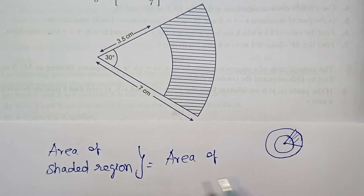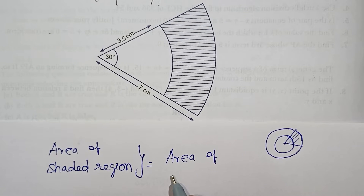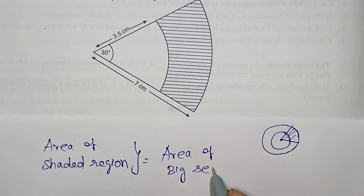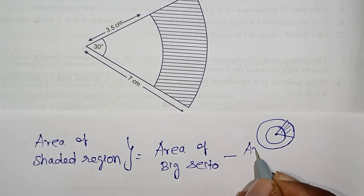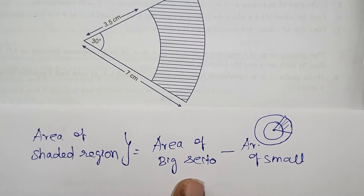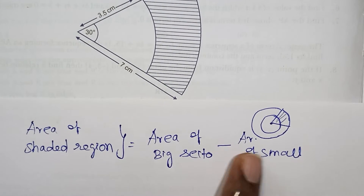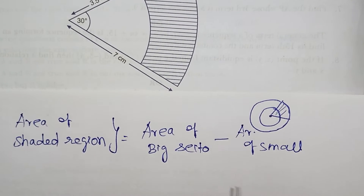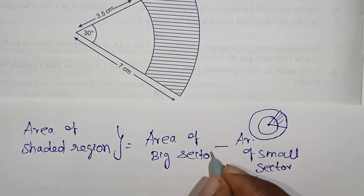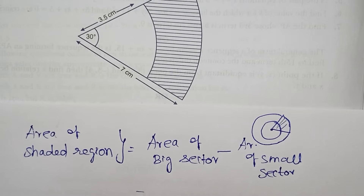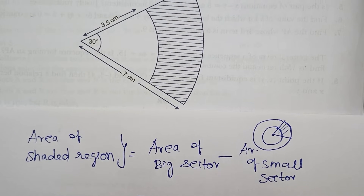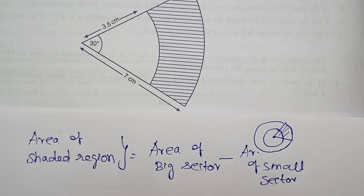Area of the shaded region equals area of the big sector minus area of the small sector — that is, the sector with radius 7 cm minus the sector with radius 3.5 cm. Let us recall the basic sector formula from the circle.